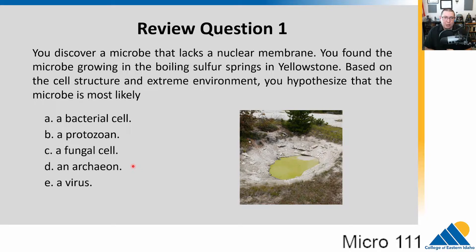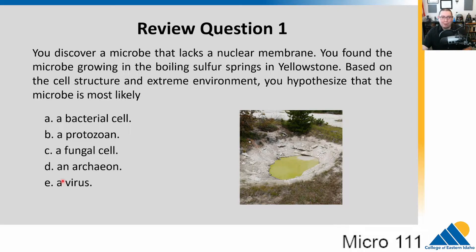What's leading us to this conclusion? First off, it lacks a nuclear membrane, so you know that means it's a prokaryote. That would lead us to two choices: either a bacterial cell or an archaea. Those are both prokaryotes. Protozoa and fungi are both eukaryotes, so they're out. And viruses aren't cells, so they're out entirely. We learned that archaea are most often extremophiles, so the best choice here would be archaea, because it's living in this boiling sulfur spring.